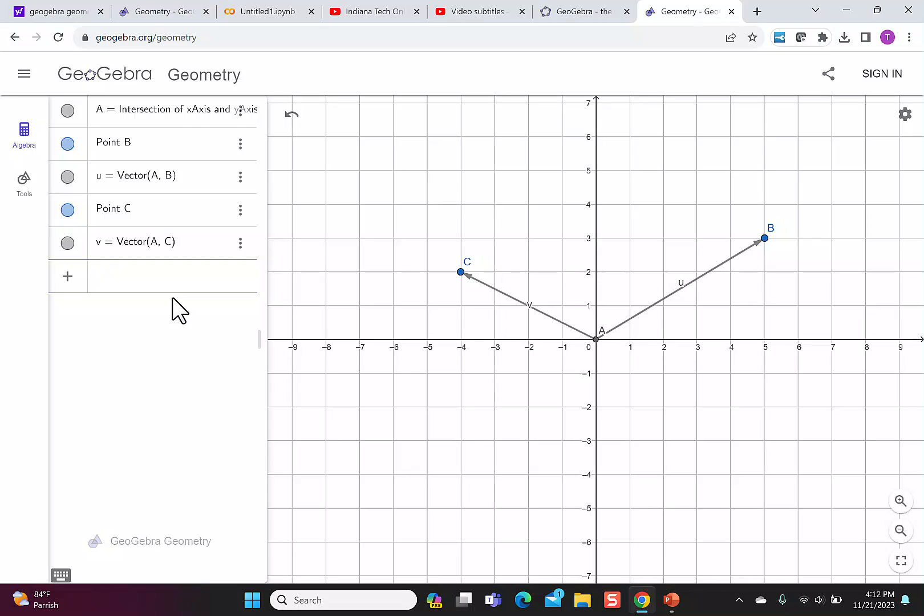Because it's a calculator, we can do operations. So say we want to do the dot product U times V. I can put in U times V and it says negative 14.